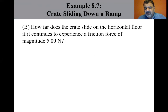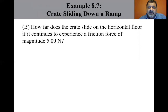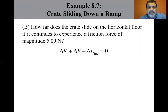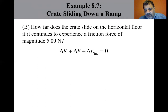How far does the crate slide on the horizontal floor if it continues to experience a friction force of magnitude five newtons? This part is handled the same way as part A, but now we consider the time interval from when the crate begins to slide at the top of the ramp until it comes to rest on the floor. The conservation of energy equation is delta K plus delta U plus delta E_internal equals zero, where the crate slides over a total distance D — ramp and floor combined.